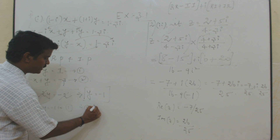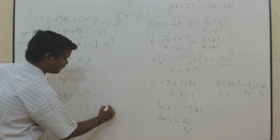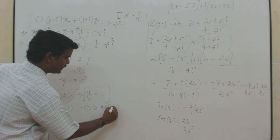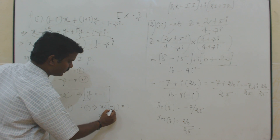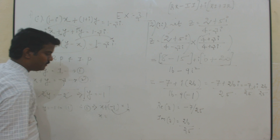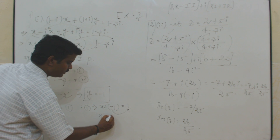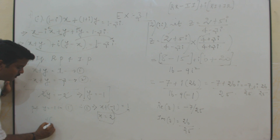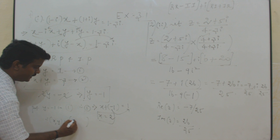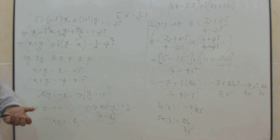Now solve equations 1 and 2. Adding them, the x terms cancel, giving 2y equals minus 2, which implies y equals minus 1. Substituting y equals minus 1 into equation 1: x plus (minus 1) equals 1, so x equals 2. Therefore the value of x and y is 2 and minus 1.